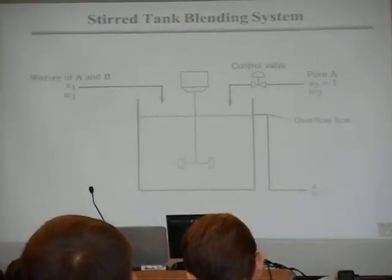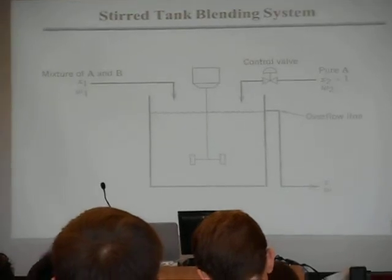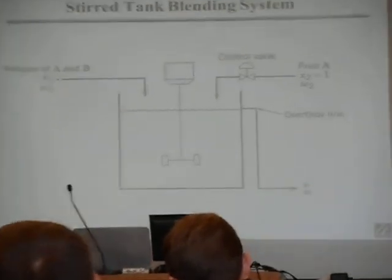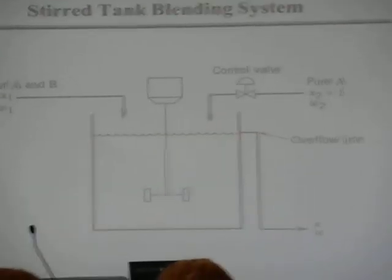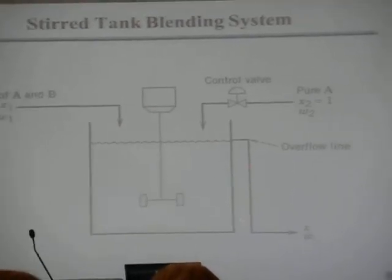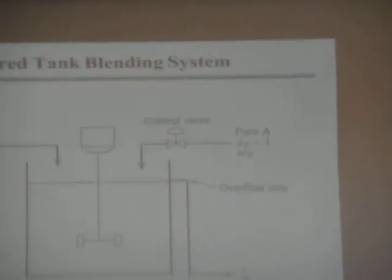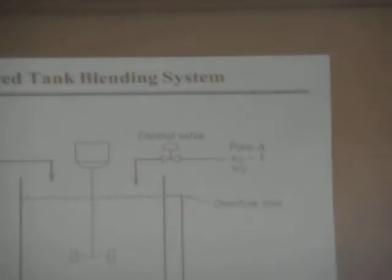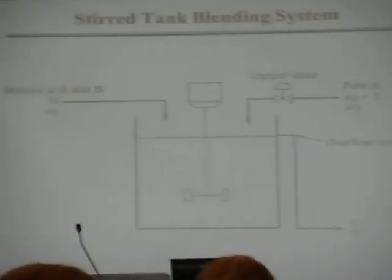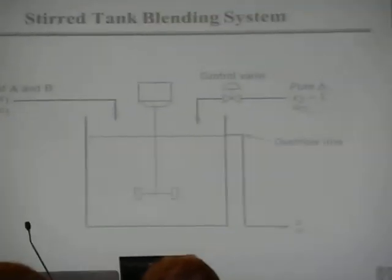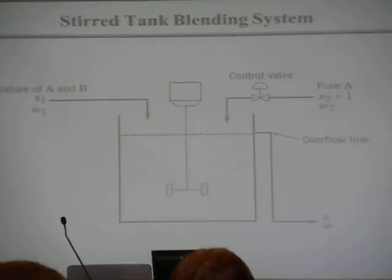In principle, this stuff comes in perfectly mixed — that's a standard assumption for a stirred tank. There's an overflow line. When you see this, it implies constant volume, because you don't get any flow out of the system until the level reaches this point. So it should be continuous and constant volume. And out here, you're going to have some mass fraction of A and some total flow.